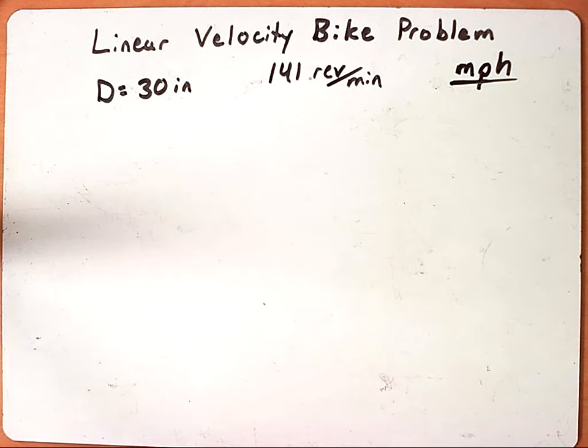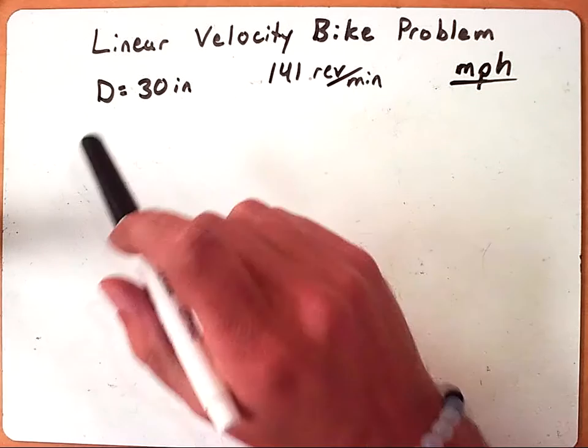Hey guys, it is the Bearded Tangent and today we're going to look at linear velocity. We've been given a problem where we have a bicycle, we know the diameter of the tire, and we know how many revolutions per minute the tire is going around. And we want to know how many miles per hour the bicycle is going to be traveling.